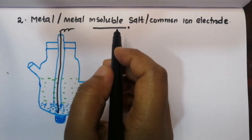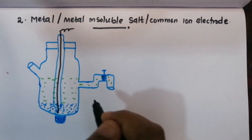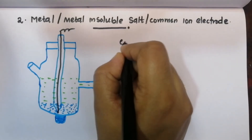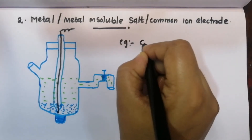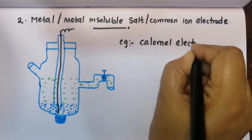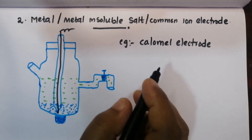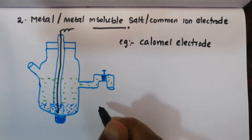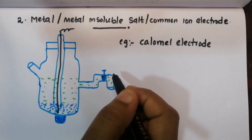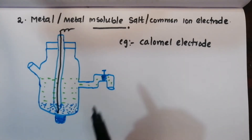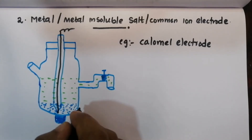Now we are learning about the metal/insoluble salt/common ion electrode. A perfect example is the calomel electrode, which is also a reference electrode. This is an example of a metal/insoluble salt/common ion electrode. Let's look at the name and the components of this electrode.